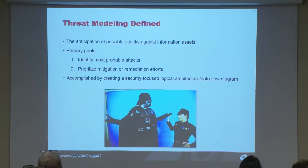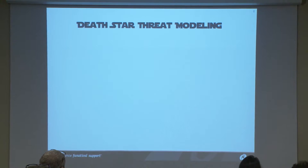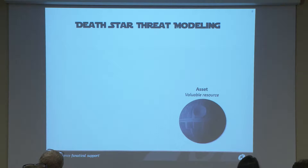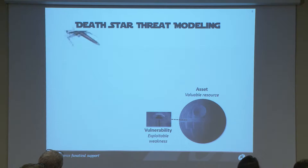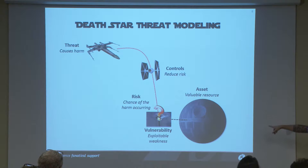Vader here didn't do a good job of either prioritizing or identifying. What this created is a mnemonic device using shared memory we all have with Star Wars to make this really easy for anybody to understand. This is your asset — this is your app, the thing you're trying to protect. In this case it's got a vulnerability: an exhaust port somebody didn't put a screen over. The threat is what comes in to exploit that vulnerability. The risk is the chance of that happening. And controls are the things we deploy to reduce the risk. If you understand this, you understand threat modeling.